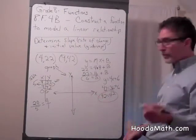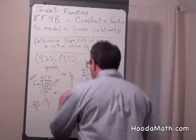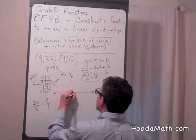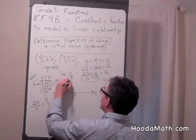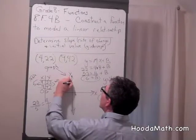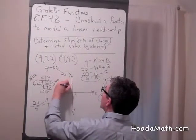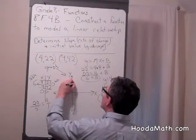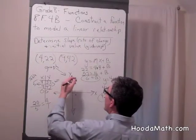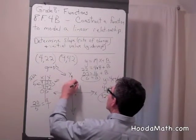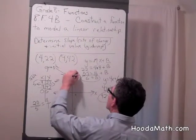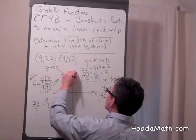We can also put it on the graph. The point (4, 22) - say this is 4 and 22 would be here. So (4, 22) is here. And (9, 42) would be approximately here.